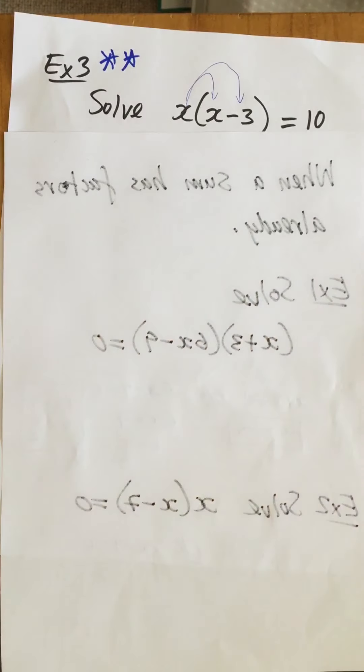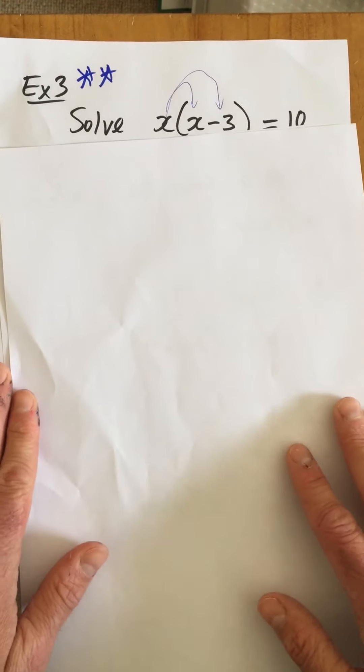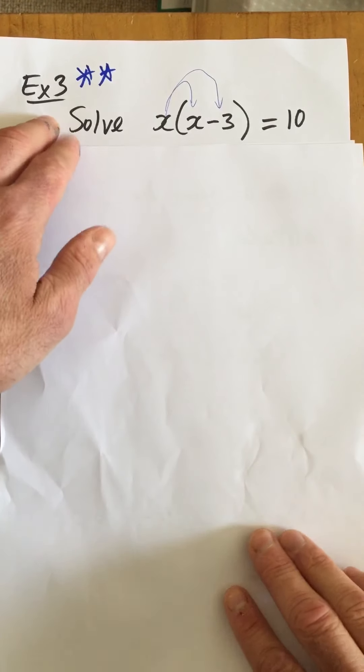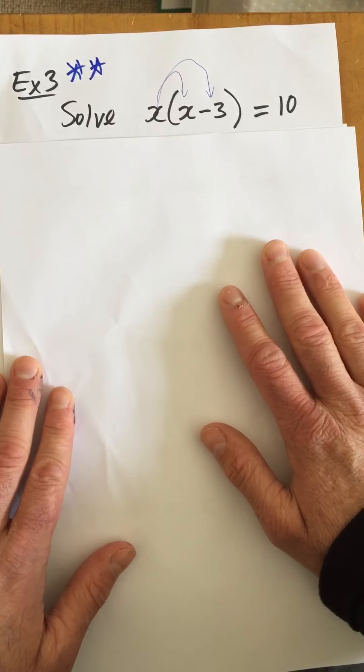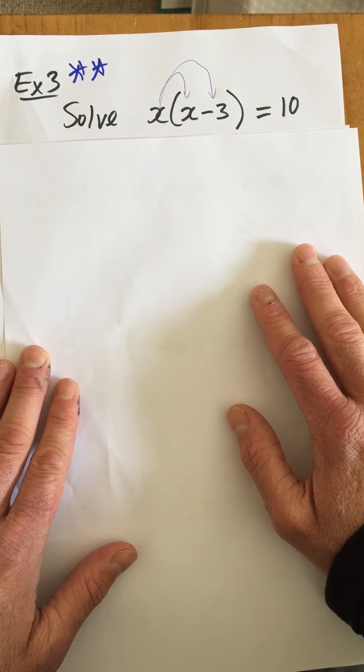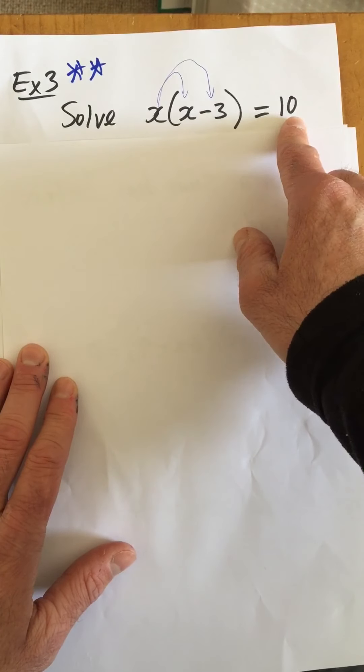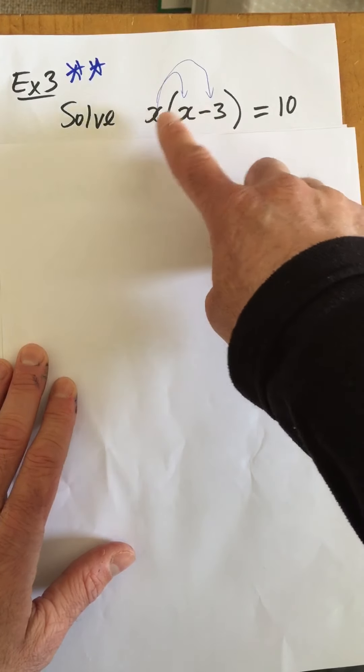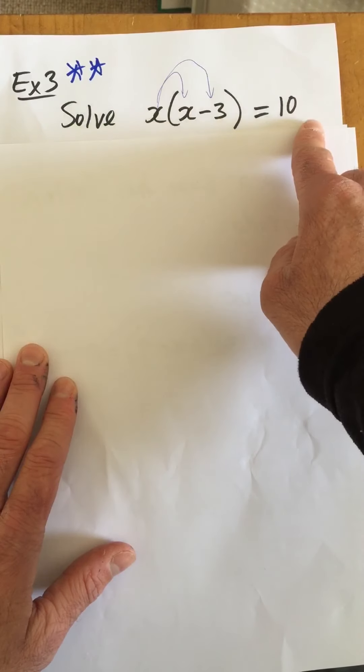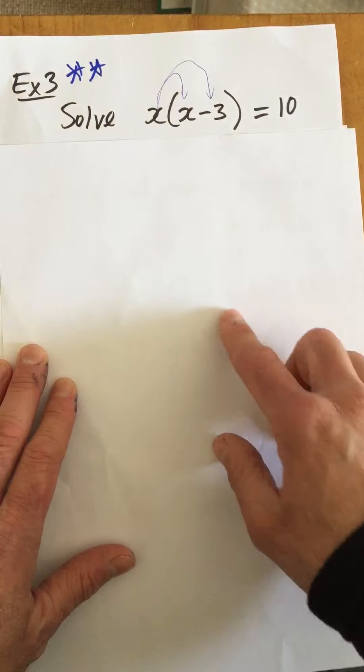In our next example, I put stars beside this one because this one is a little bit different to the previous two. Can you spot what's different about these guys? Yeah, it's not equal to zero. It's equal to 10. So when you have something that's factored already but it's not equal to zero, it's equal to some number, then unfortunately we have to simplify it out first.